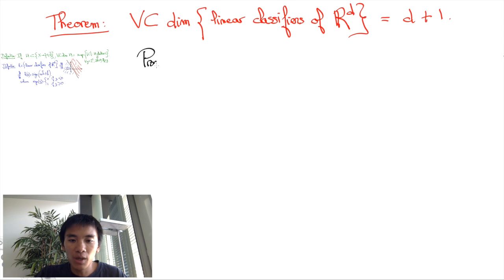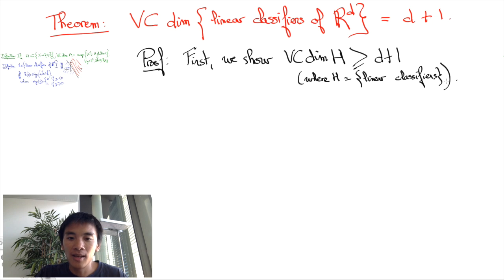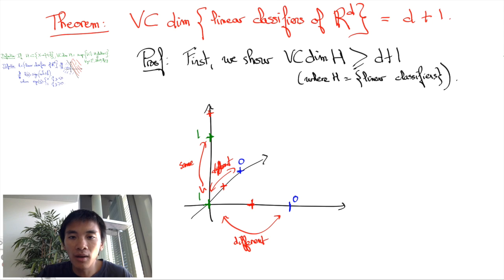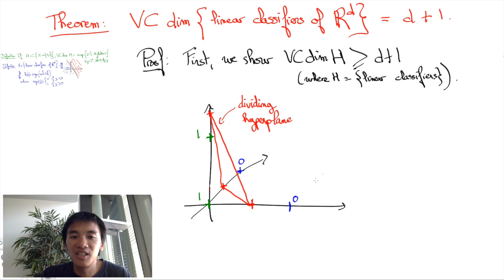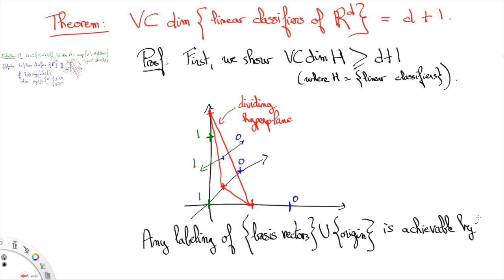Let's now prove the theorem. First, we shall prove that the VC dimension of linear classifiers is at least d plus 1 by constructing a set of cardinality d+1 that is shattered by linear classifiers. To do so, consider the vectors of a canonical basis along with the origin, and consider any labeling of them. If a basis vector has a different label from the label of the origin, place a red point in between them; otherwise, place the red point further away from the basis vector. Consider the hyperplane that goes through all of the red points — it nicely divides the basis vectors and the origin into two sets of same labels. Finally, we can choose the orientation of the hyperplane that yields the labeling we started with. We have found a linear classifier that fits our labeling of d+1 points, proving that the VC dimension of linear classifiers is at least d+1.